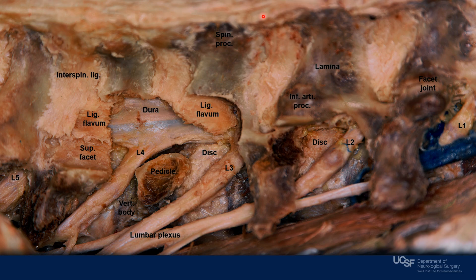Superficially, we observe the supraspinous ligament. In a deeper layer, we see the interspinous ligaments in between the thick and short spinous processes of the lumbar vertebrae. Lateral to the spinous process, we see the short lamina with a large interlaminar space.